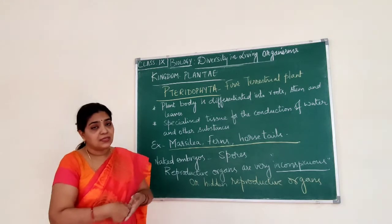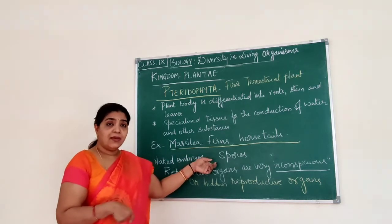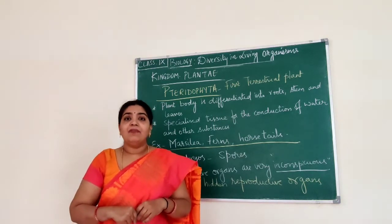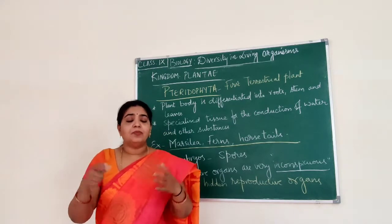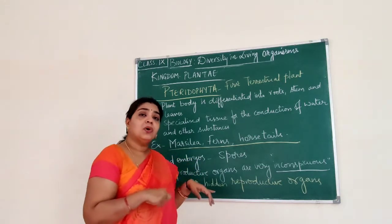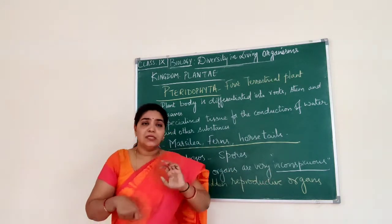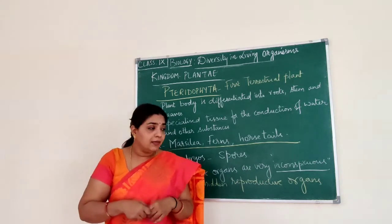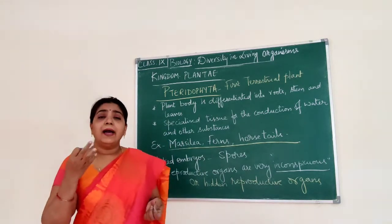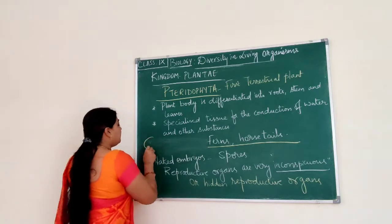Algae, mosses — that is bryophytes — and even pteridophytes also reproduce by producing spores. In these plants we cannot find their reproductive structure easily. Usually when we think of a plant's reproductive structure, the flower comes to mind. But in the case of thallophyta, bryophyta, and pteridophyta, the reproductive organs are very inconspicuous — they are hidden. Because of this, they come under a group called cryptogamy.